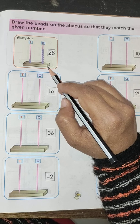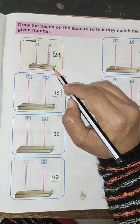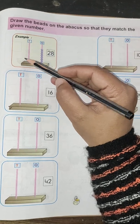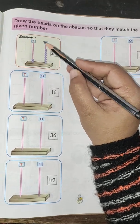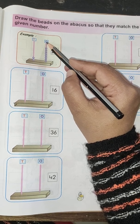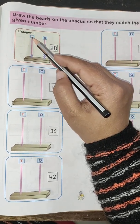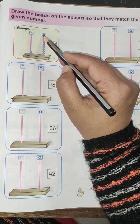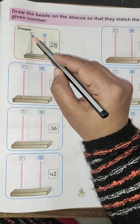See the first example which has already been given for you. See here, this is abacus. Here, O stands for ones, and T stands for tens. O means ones, T means tens.